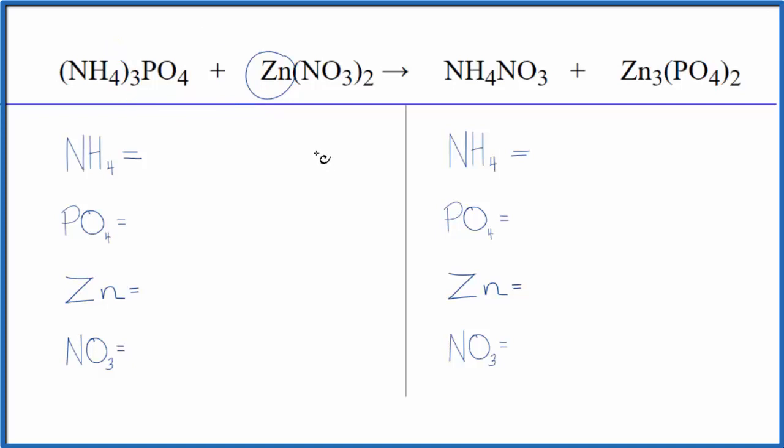With this double displacement reaction we have a lot of polyatomic ions. We have the ammonium ion here and over here, we have phosphate on both sides, and then the nitrate that's also repeated. We're going to count these polyatomic ions as just one thing - it'll make it a lot easier to balance.